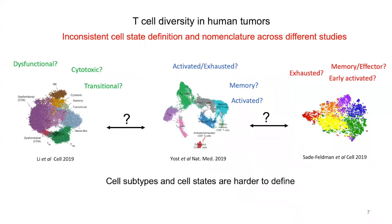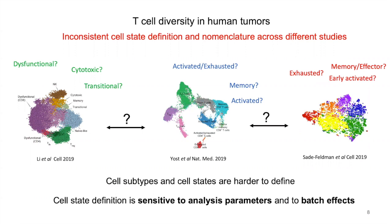For example, these recent studies show that T cells in human tumors can be found in different states of differentiation, such as cytotoxic, transitional, activated, and exhaustive. But these cell state definitions are inconsistent across studies, so we don't know if states from one study exist in a second one, limiting our ability to discover general patterns. Multiple sources contribute to this problem, but in particular cell state definition is very sensitive to data analysis parameters and to batch effects. And this is the bioinformatics problem we are addressing here.